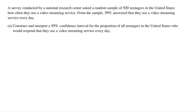A survey conducted by National Research Center asked a random sample of 920 teenagers in the United States how often they use a video streaming service. From the sample, 59% answered that they use a video streaming service. That is a P-hat — a sample proportion. The 59% came from a sample of 920 teenagers; it is not a population parameter, it is just a sample proportion.